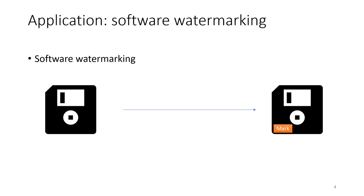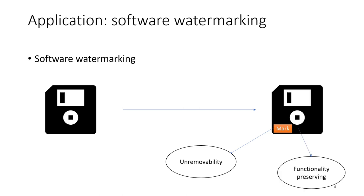Constrained and private constrained PRFs have found various applications. One notable application is software watermarking. In software watermarking, we need the mark to be unremovable — if someone has a marked version of our program, they should not be able to remove the mark. We also want the watermarked version to be functionally equivalent to the original unmarked version.